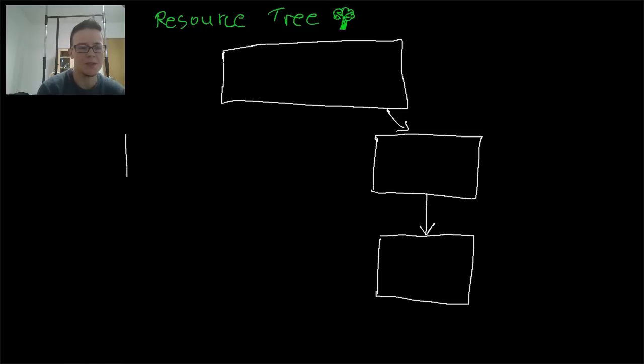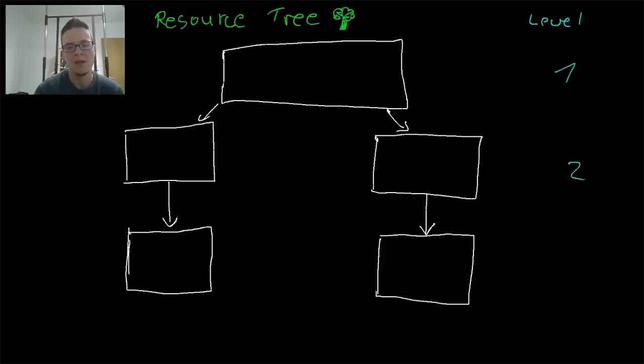Now on Windows, there is the convention that every tree has three levels. And there's a meaning to every level. So level one would be the type of the resource. So let's say that's level one, the root. Level two is the name of the resource.